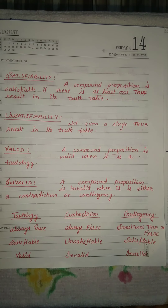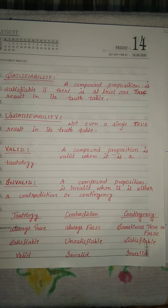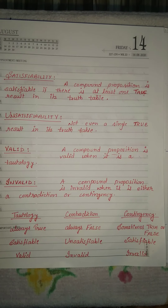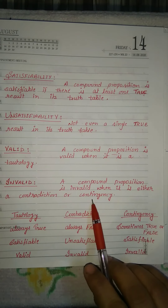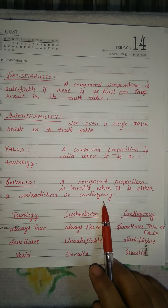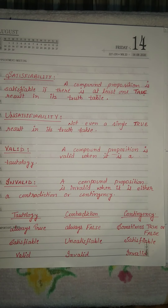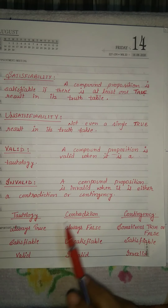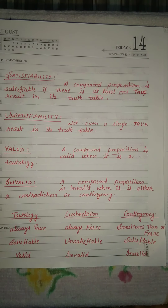Not being a tautology does not mean it is always a contradiction — it can be a contingency as well. Invalid does not mean it is always a contradiction; it means it is a combination of 0s and 1s, so it can be contingency as well. Therefore, invalid covers both contradiction and contingency.